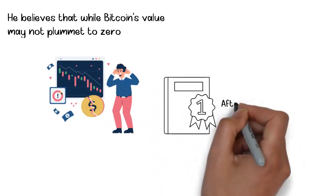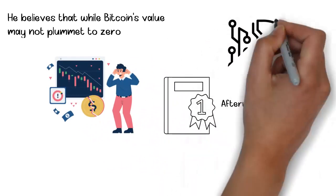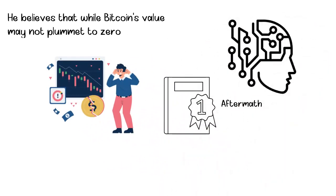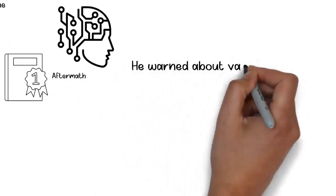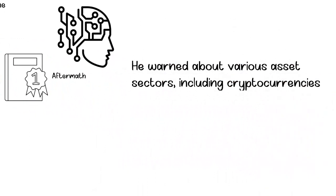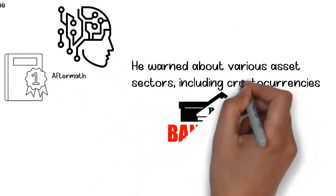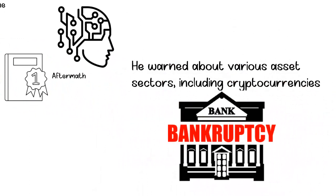In his 2019 bestselling book, Aftermath, Rickards discusses how global markets are artificially inflated and offers strategies for preserving capital. He warned about various asset sectors, including cryptocurrencies, and asserted that investors in those assets will eventually face bankruptcy.